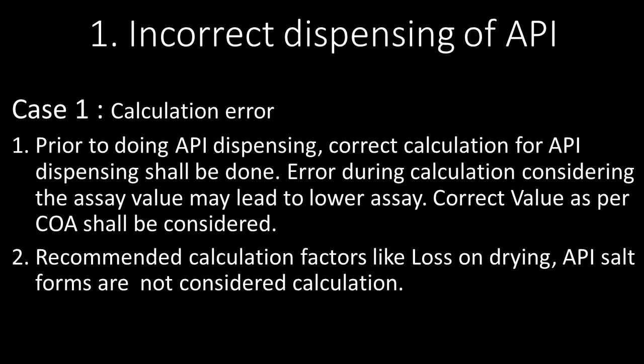The first very common reason for lower assay of a product is incorrect dispensing of API. Under incorrect dispensing of API, we will see 3 cases. Case 1 is calculation error. Prior to doing API dispensing, correct calculation for API dispensing shall be done. Error during calculation considering the assay value may lead to lower assay. The correct value as per COA shall be considered during the dispensing process.